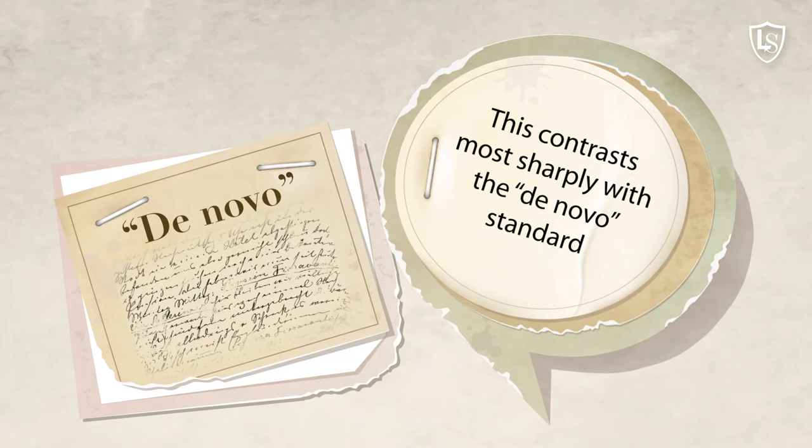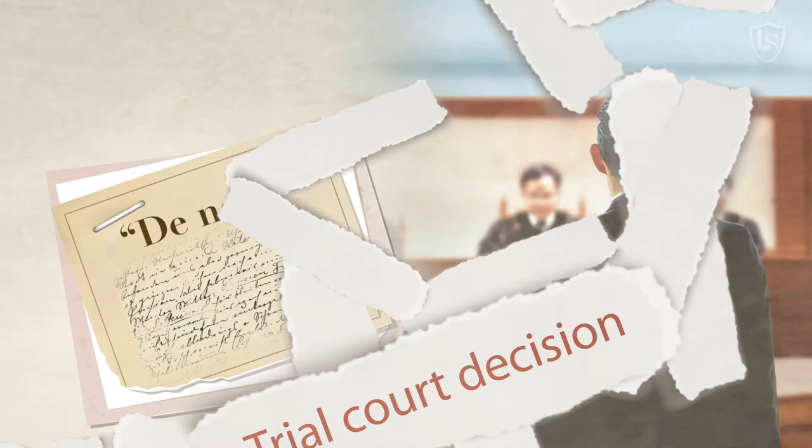Note that this contrasts most sharply with the de novo standard, in which appellate courts give no deference to trial court decisions. This is typically applied to judicial findings on questions of law.